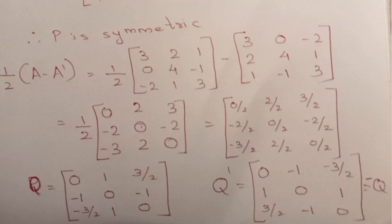P transpose equals P, therefore P is symmetric. Half of (A minus A transpose) equals Q equal to [0 1 3/2 / -1 0 -1 / -3/2 1 0]. Checking: Q transpose equals minus Q, therefore Q is skew-symmetric.